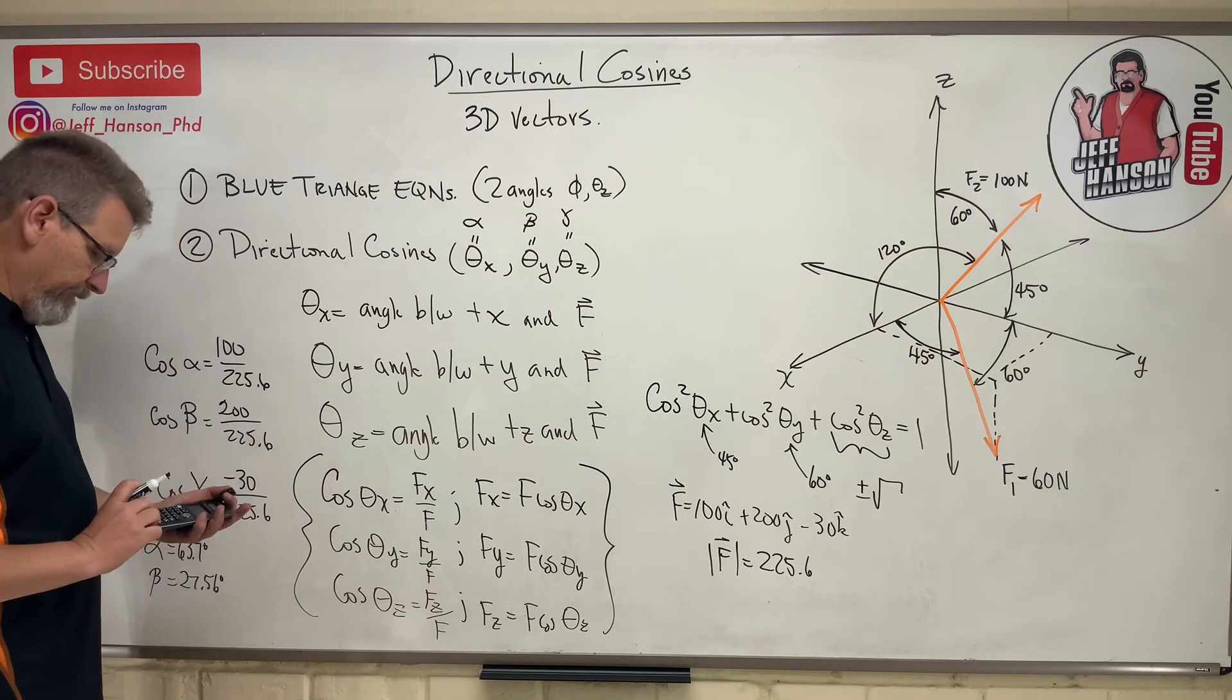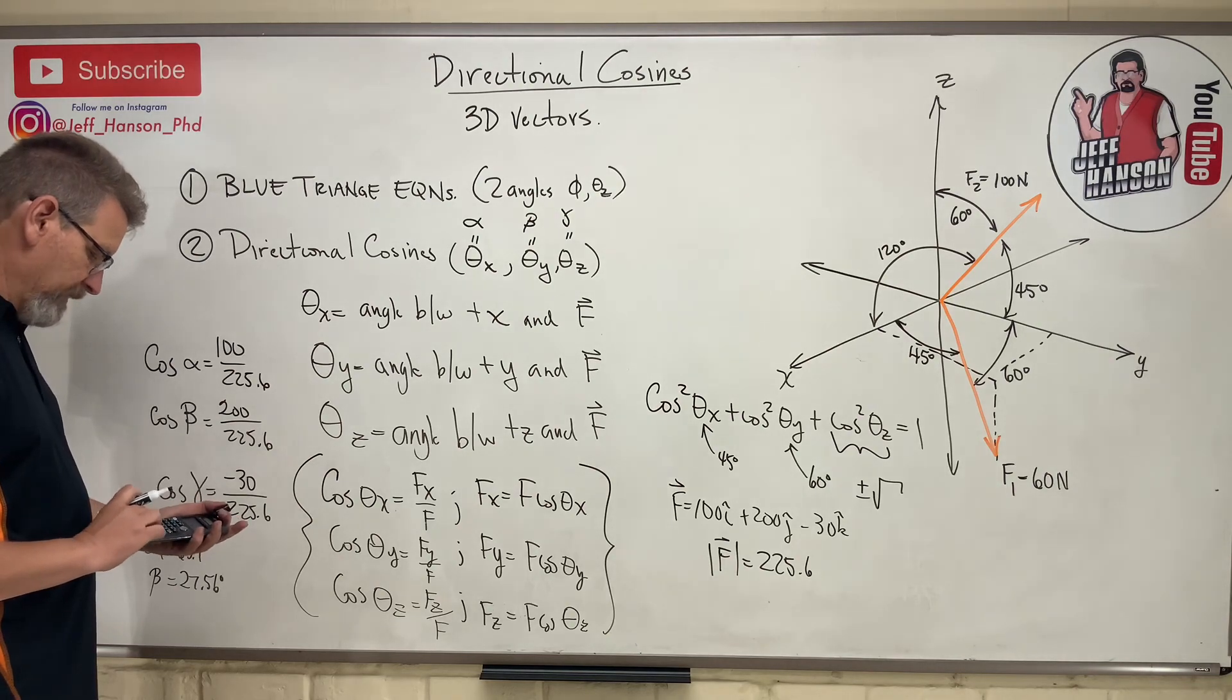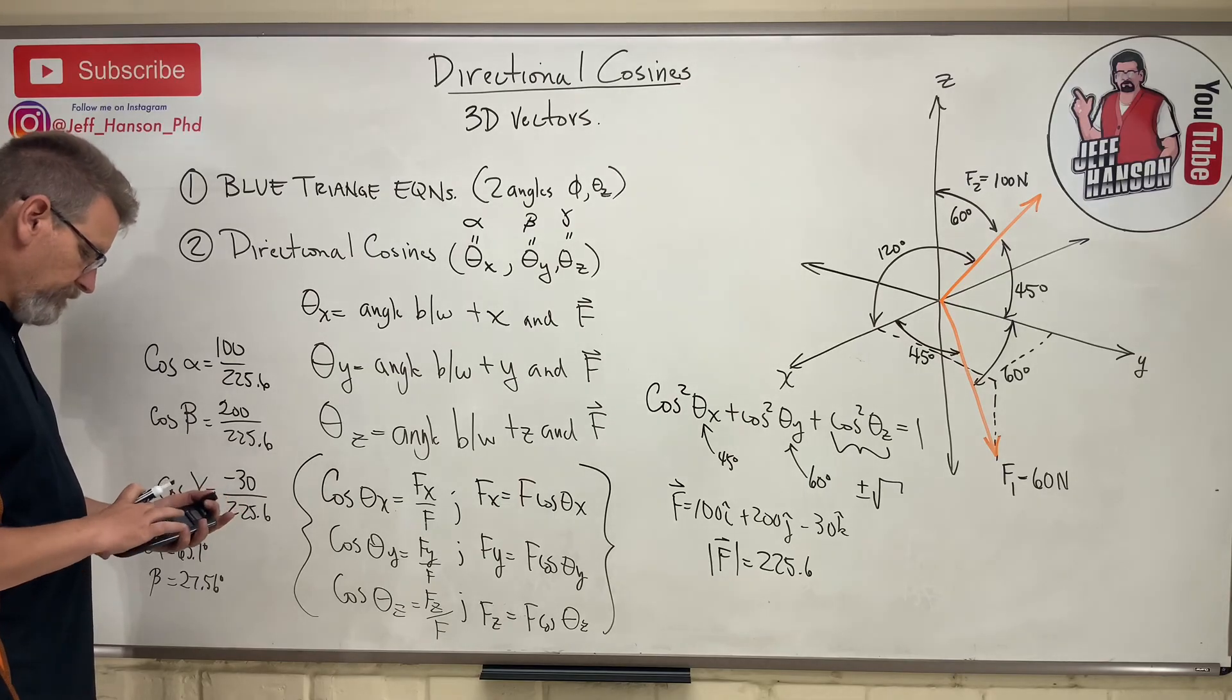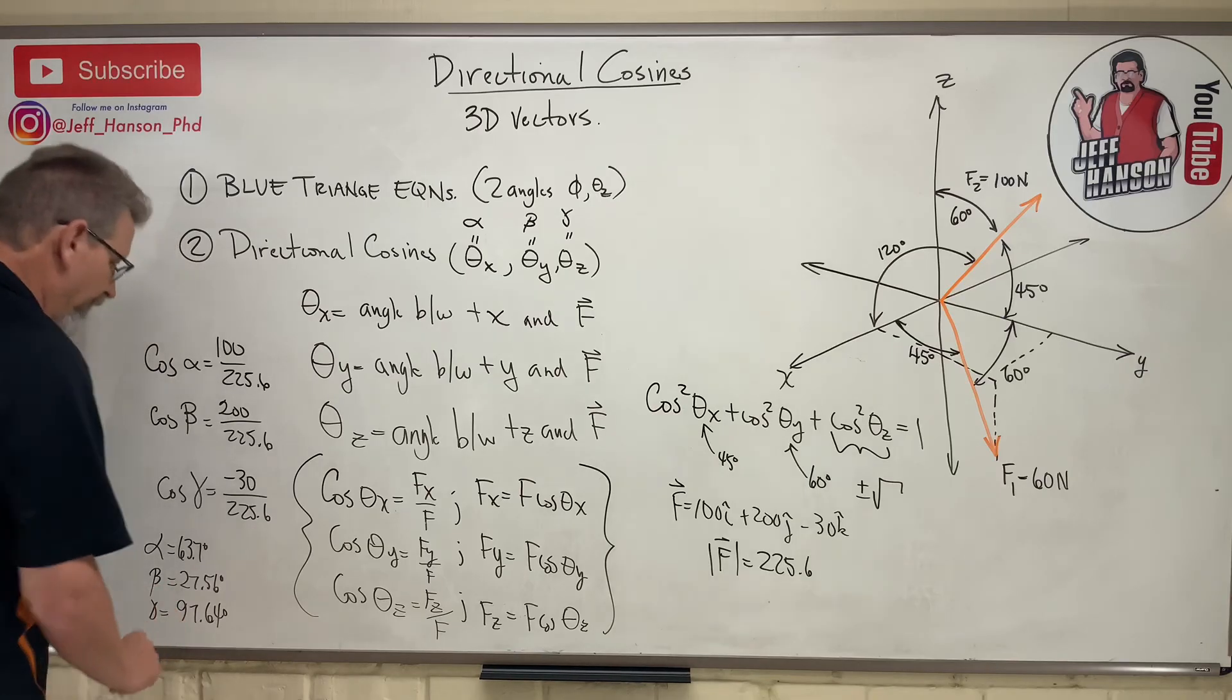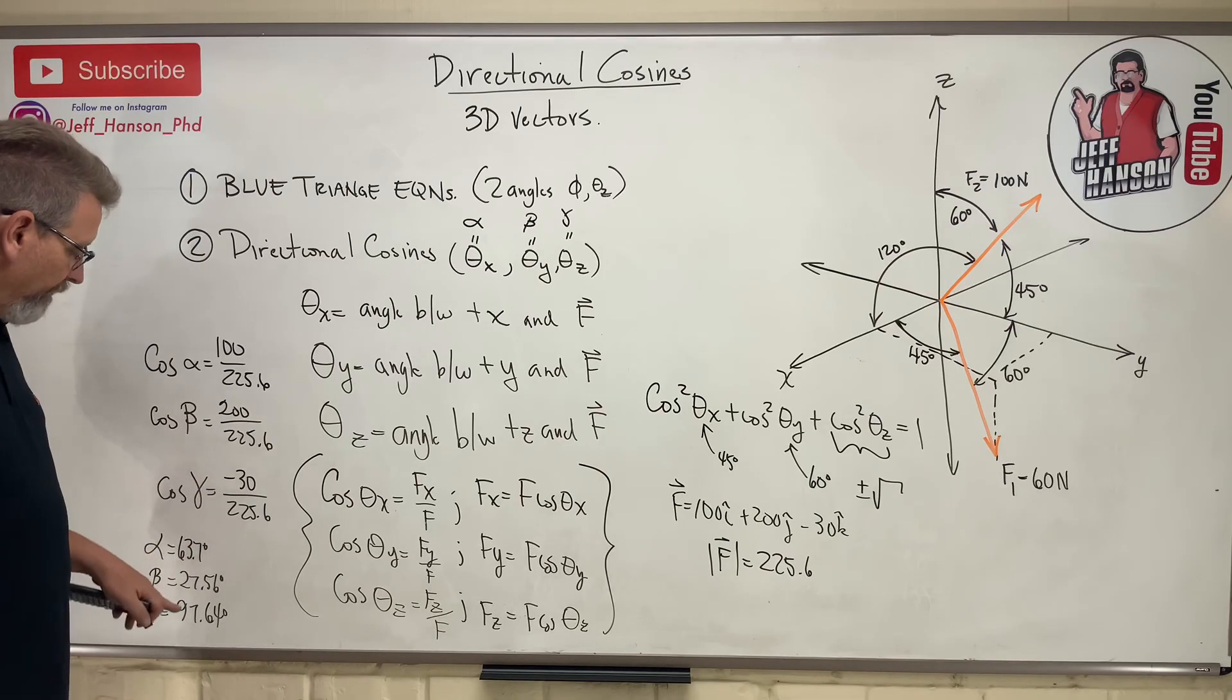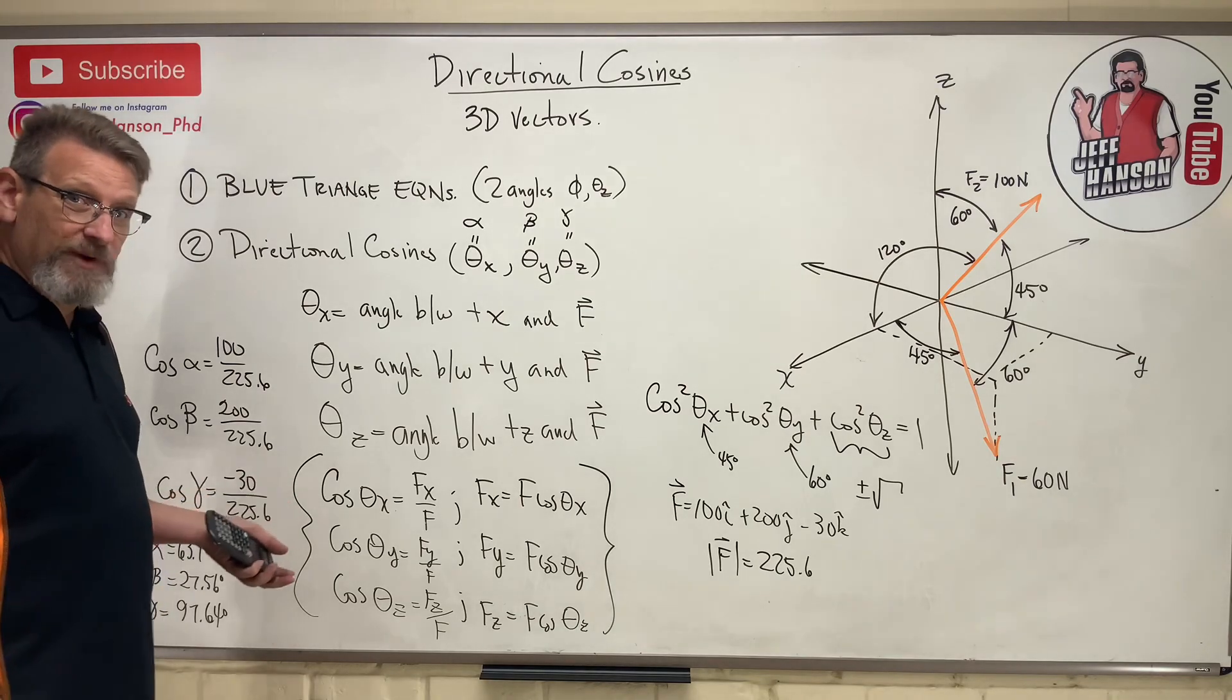And then finally, negative 30 divided by 225.6. I did it wrong. Negative 30 divided by 225.6 equals, and then inverse cosine of that is 97.64. Gamma. And I knew that was true. If I have a negative, when I put inverse cosine of a negative number, I'm going to get a number bigger than 90. So that sounds right to me.